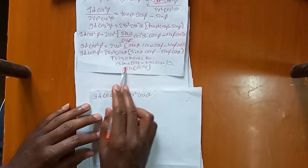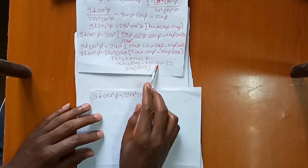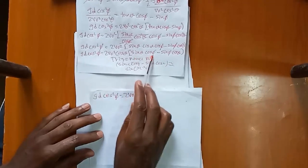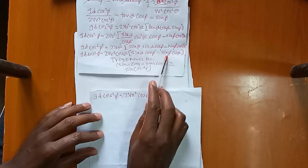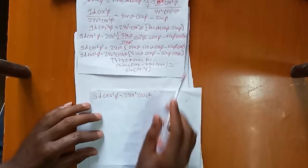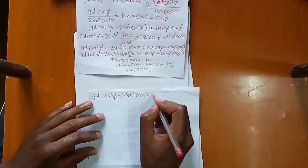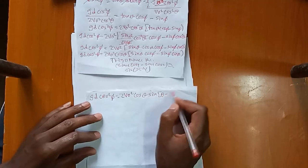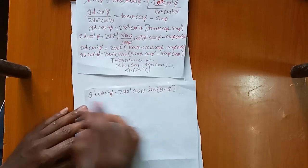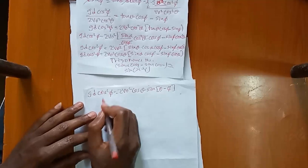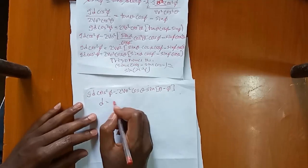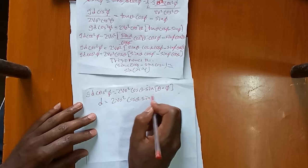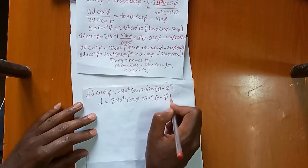Using the trig identity sin(x)cos(y) minus sin(y)cos(x) equals sin(x minus y), we get sin(θ minus φ). Therefore d is equal to 2v₀²·cosθ·sin(θ minus φ) over g·cos²φ. This confirms the given formula.